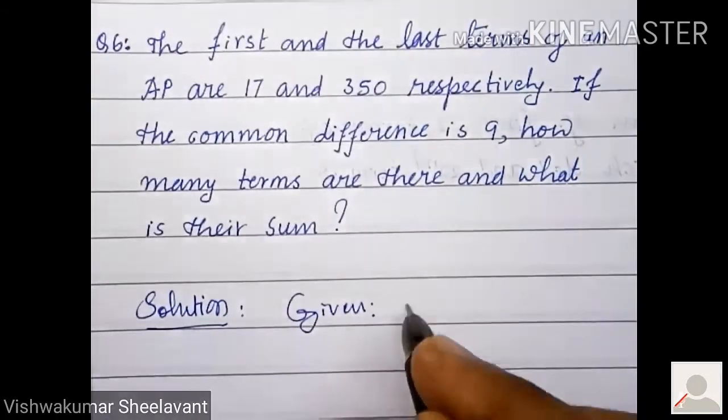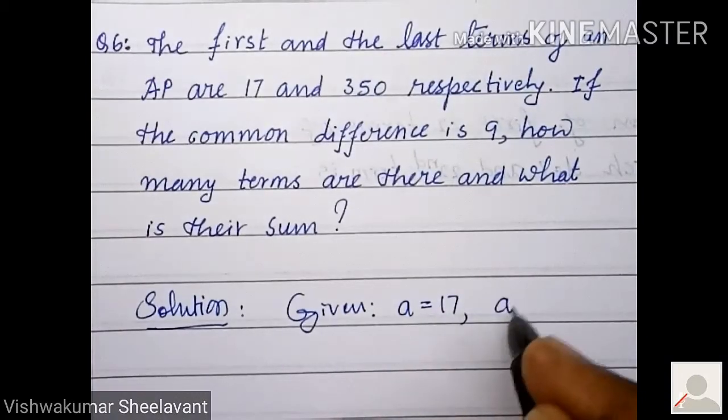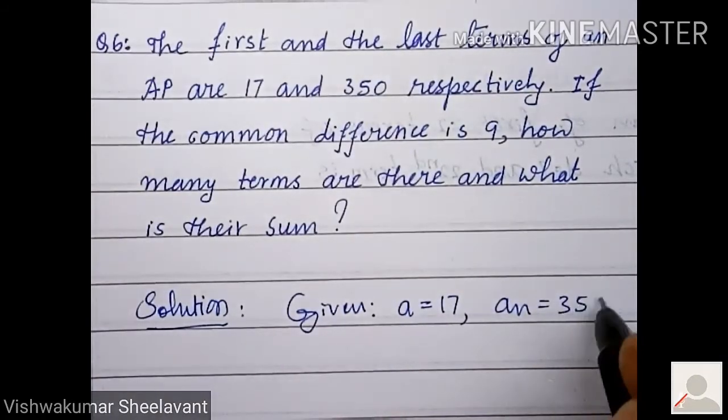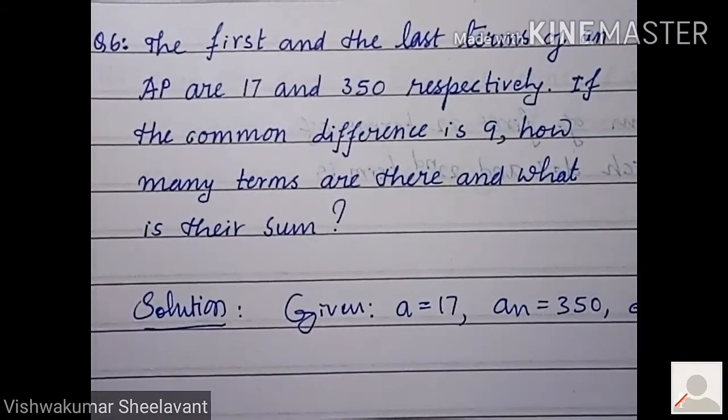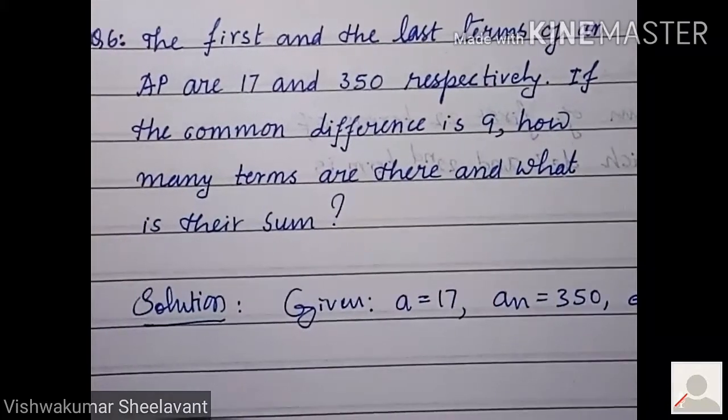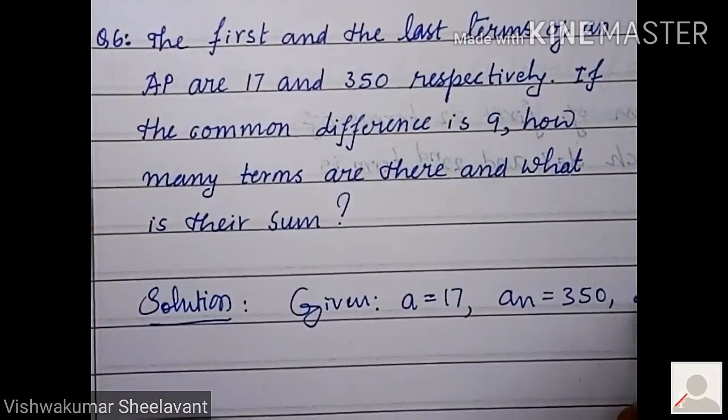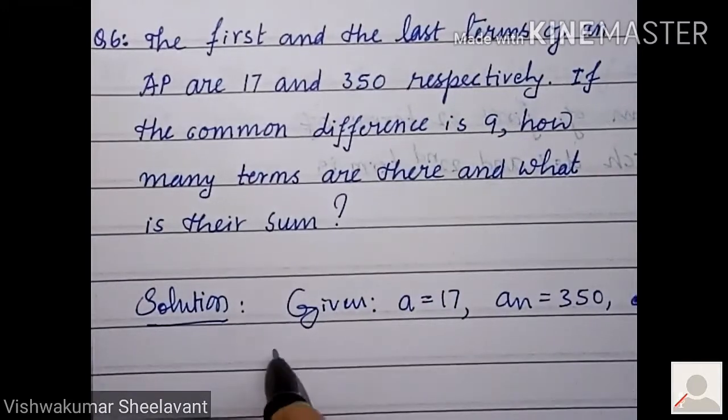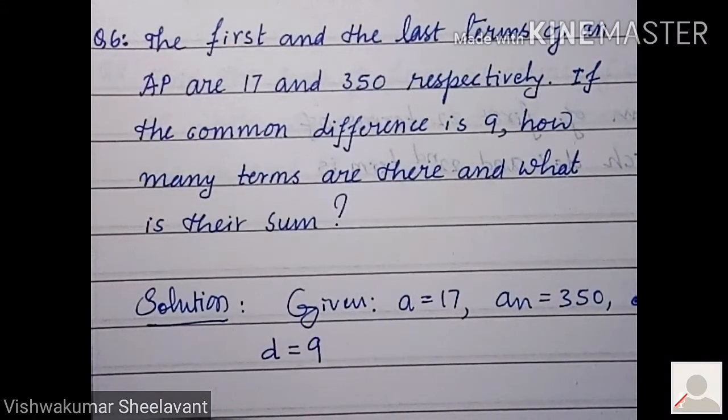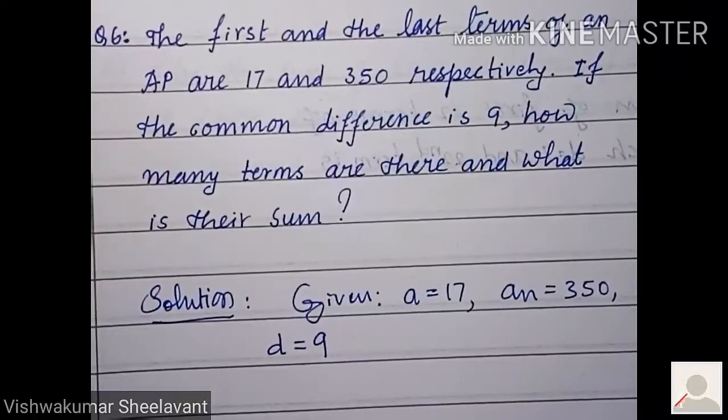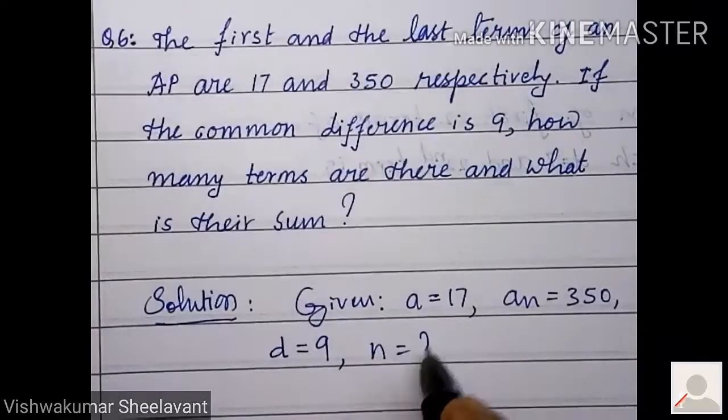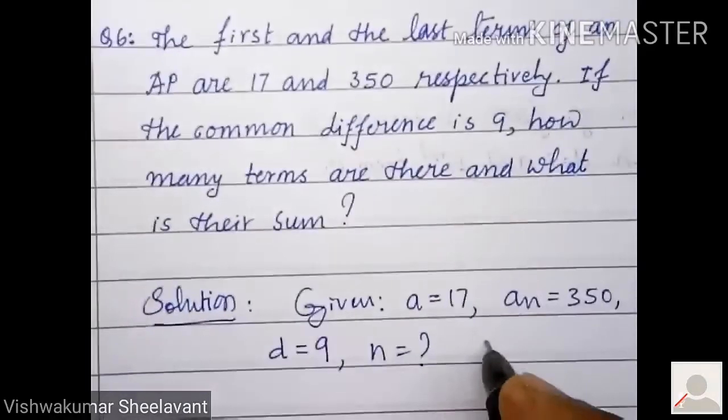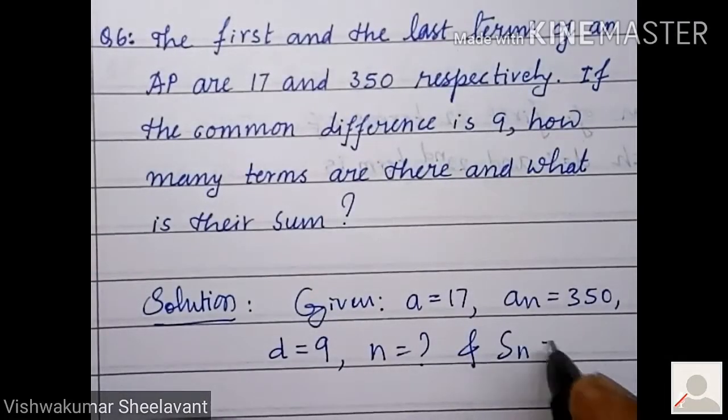a is equal to 17, an equal to 350. I will write the next line only right. d equal to 9, d equal to 9. n is how much and Sn is how much?